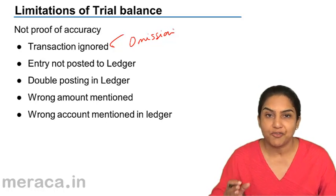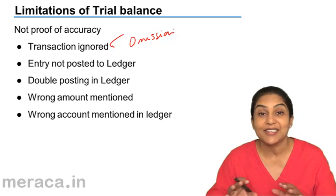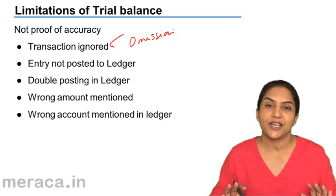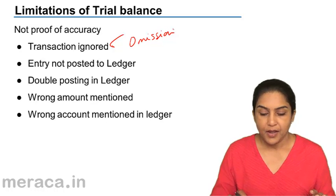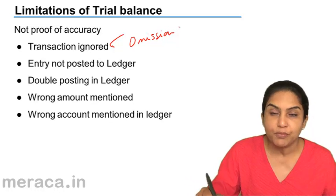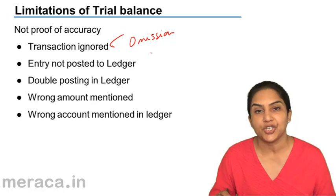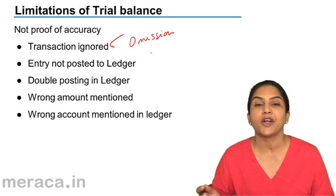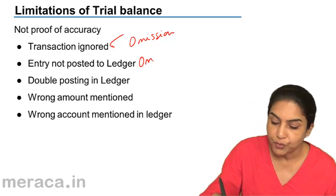An error is reflected in the trial balance only when the debit balance and the credit balance disagree. Similarly, if there is a complete omission of a transaction, or if an entry is recorded in the journal but not posted to the ledger — this is omission of posting — it will not be caught.